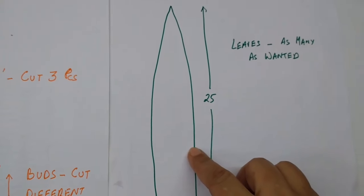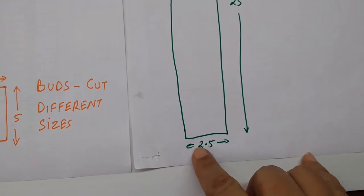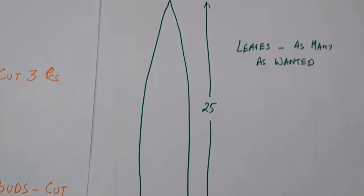This is the stencil of a leaf. It is 25 cm high and 2.5 cm wide at the base. Cut as many leaves as wanted.